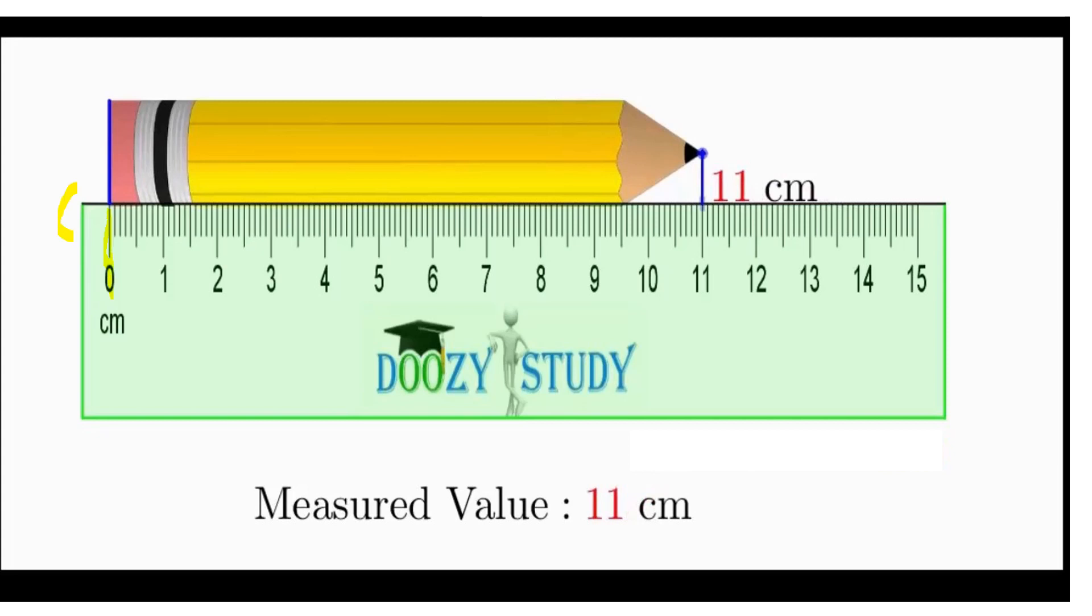Don't place it here on the edge of the ruler. No, you have to place it on zero mark and then you have to see where the object ends and that is going to be your final answer. So this pencil is about 11 centimeters long, right?